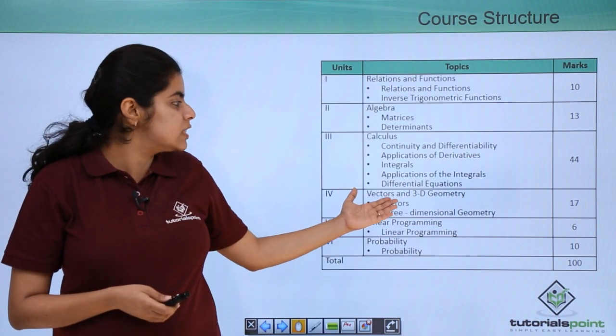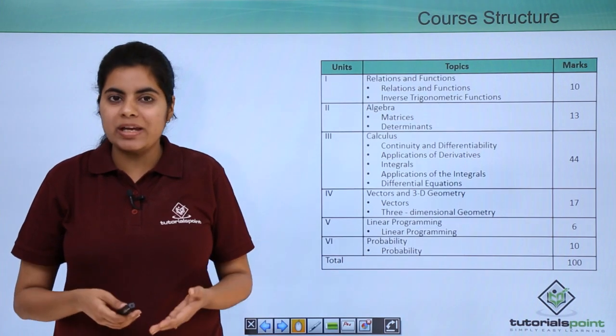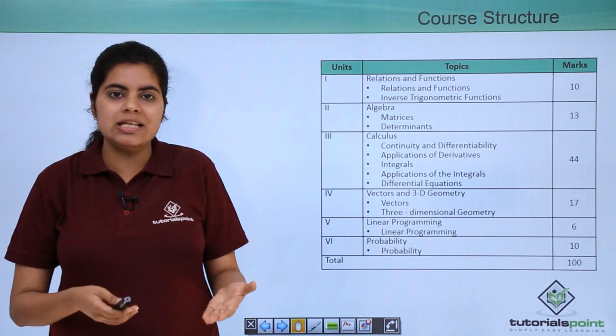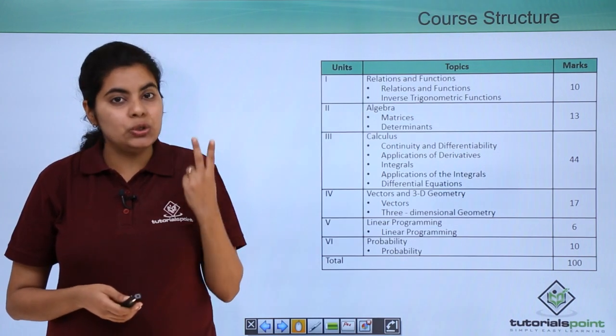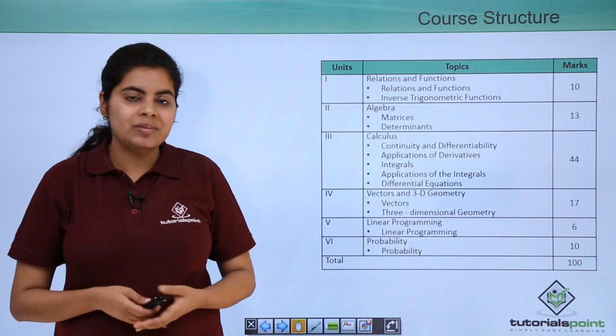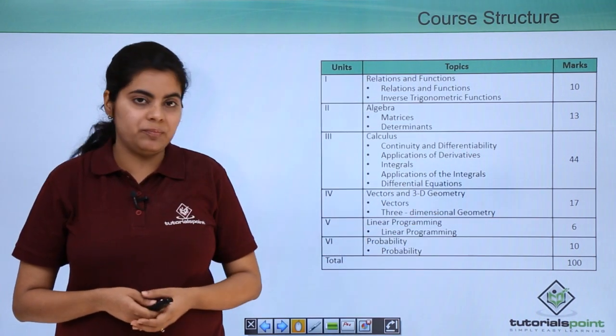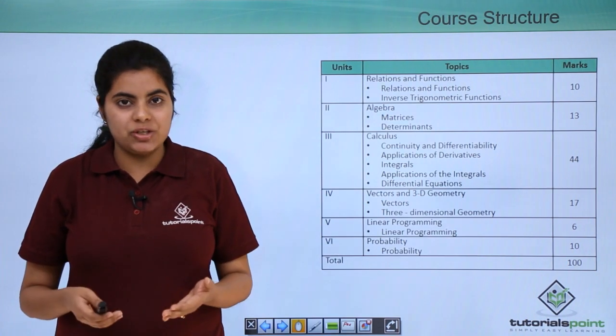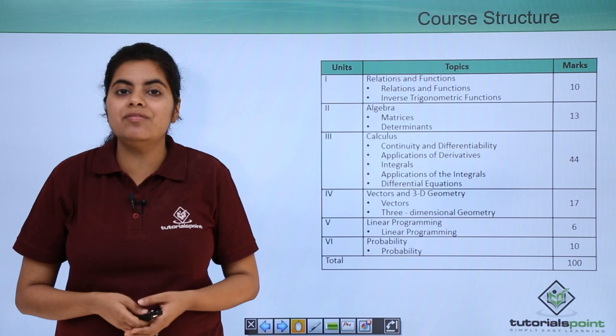Next we come to the importance of unit number four which is vectors and 3D. So vectors and 3D means vectors and three-dimensional geometry. It includes again two chapters: the first one is named as vectors and the second one is named as three-dimensional geometry. And both these chapters together constitute an important total of 17 marks.